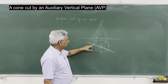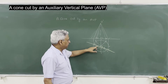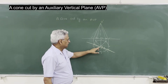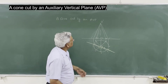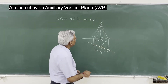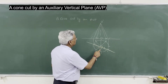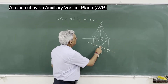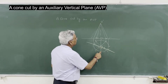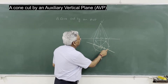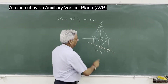A is on the base, between 1 and 8. B is on O-1. C is on O-2. D is on O-3. And F is on O-4, 5.